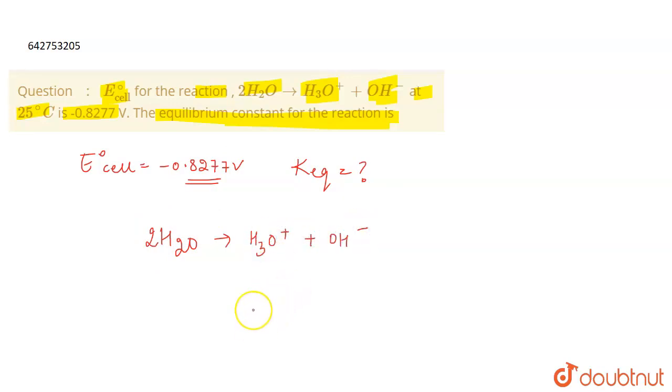If we look into this reaction, the electron change involved is one. You can recognize it by the charges on the ions - there's only +1 or -1 charge, so the electron change involved here is one only. So n equals 1.